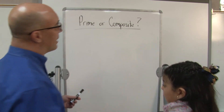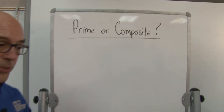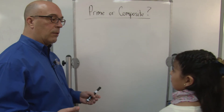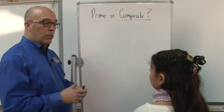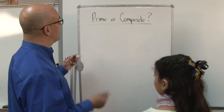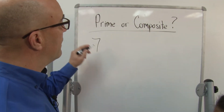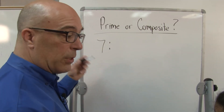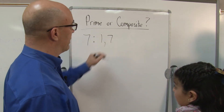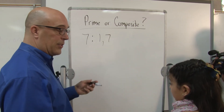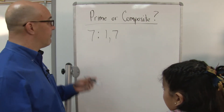So a prime number — what can you tell me about prime numbers? You can only go with ones. Only one and the number itself will go into it. So if I had the number 7, the factors of 7 — numbers that will go into 7 — are 1 and 7, one and the number itself. There's nothing else that can go into 7 evenly.